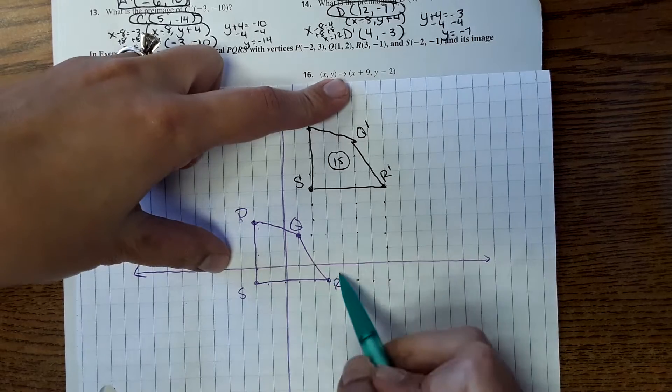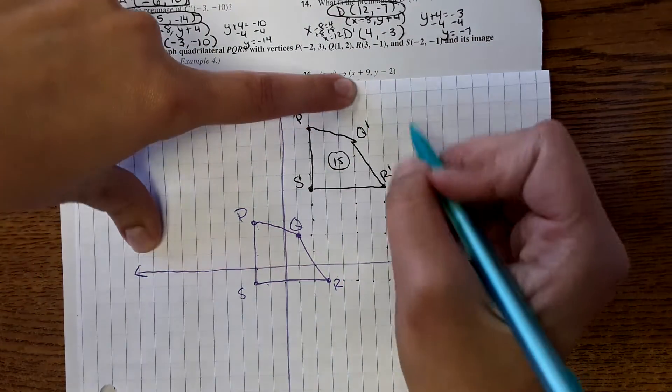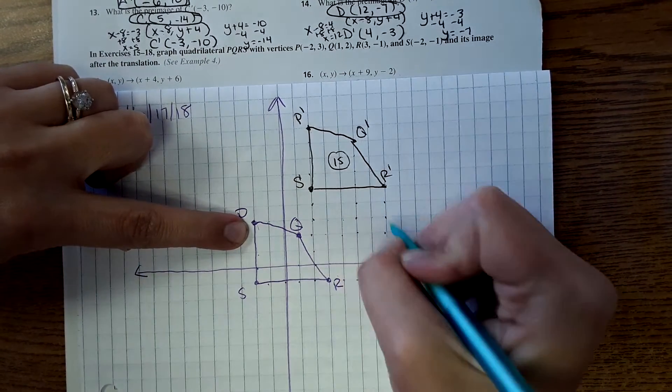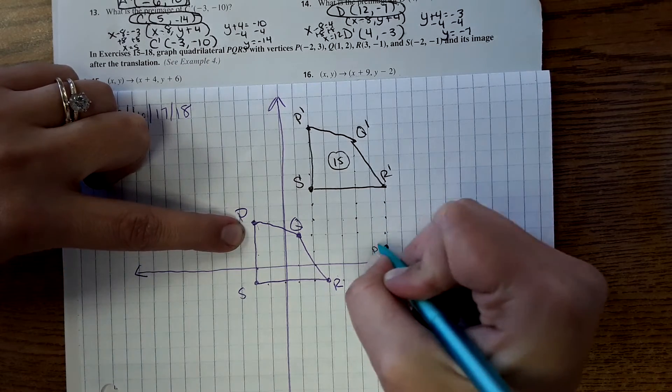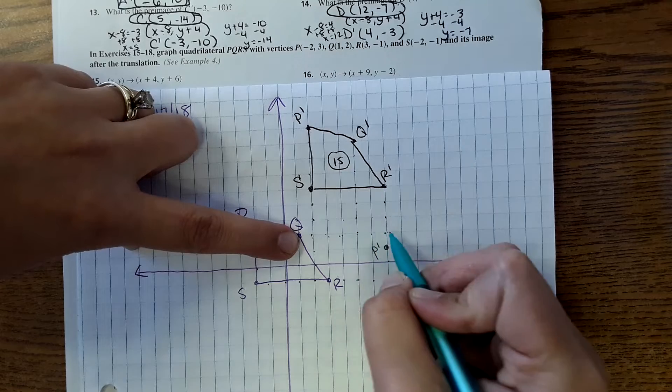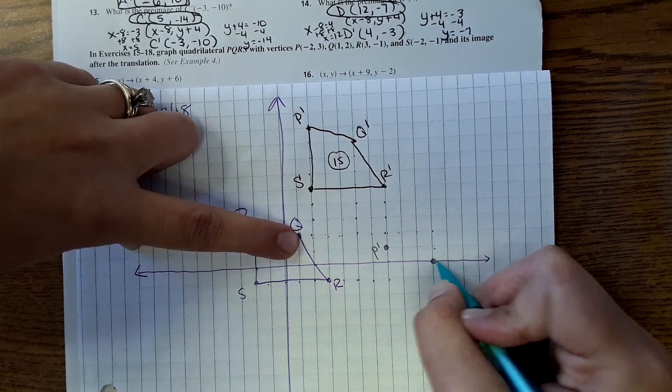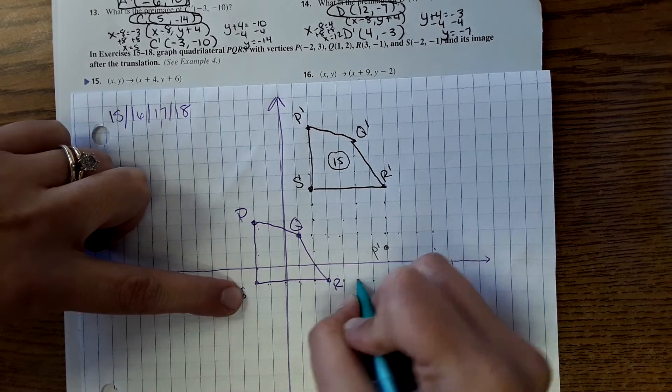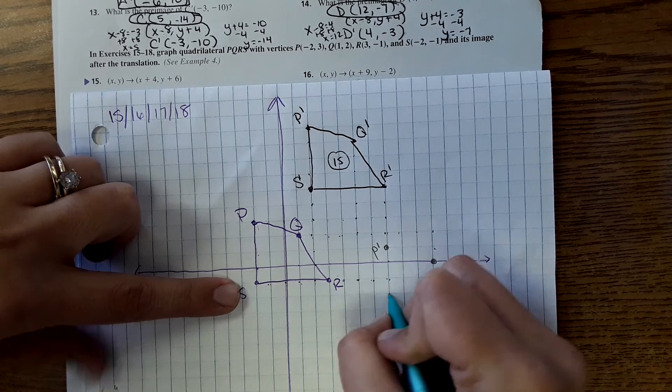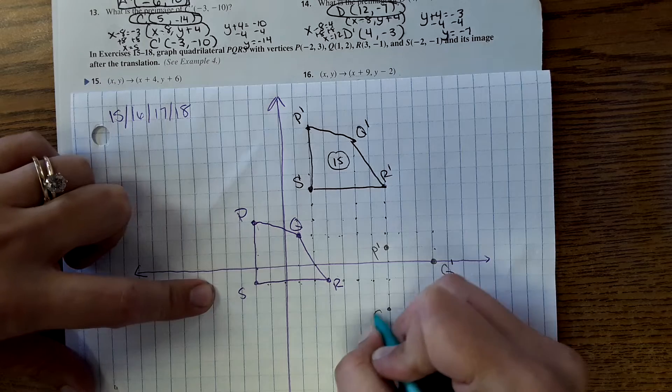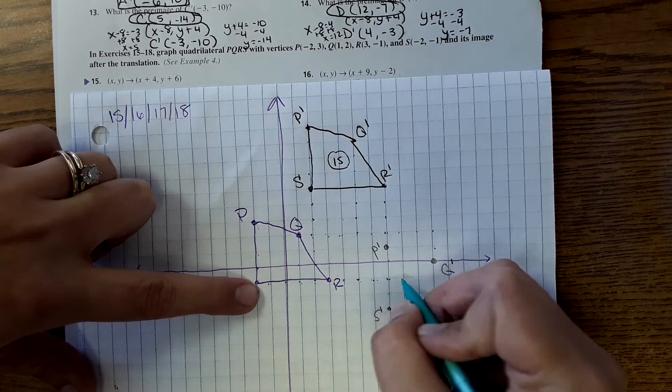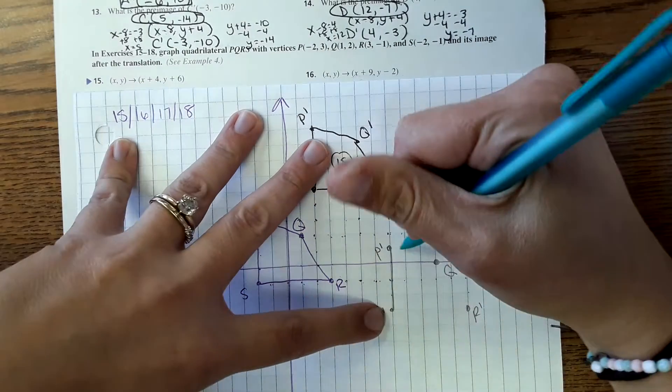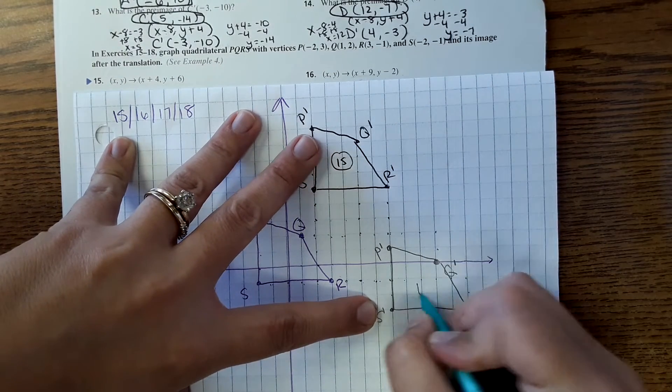Number 16. We're still working with the same original shape. They just have a new rule here. So this one is plus 9, minus 2. So I'm going to move this over 9 and down 2. So P prime's over here now. Okay, and here is our next shape. And this is number 16.